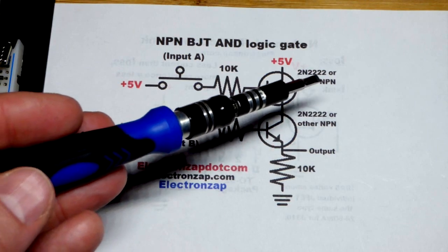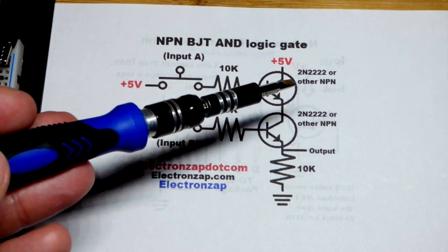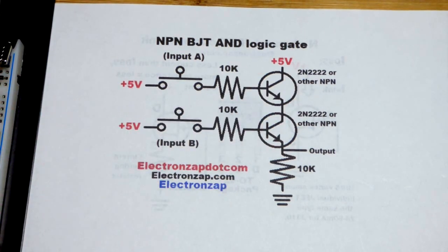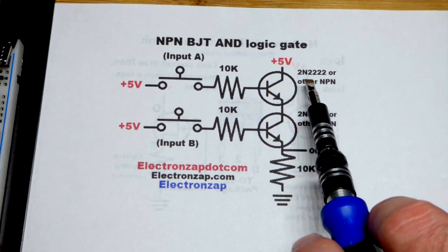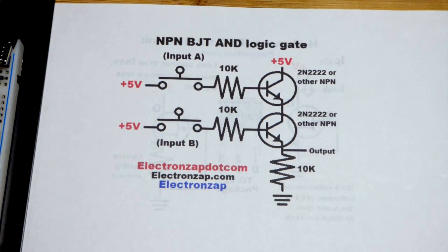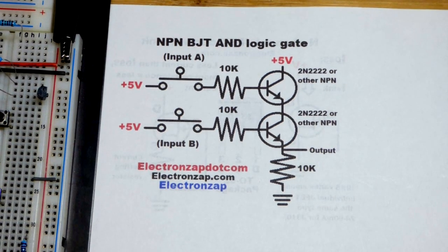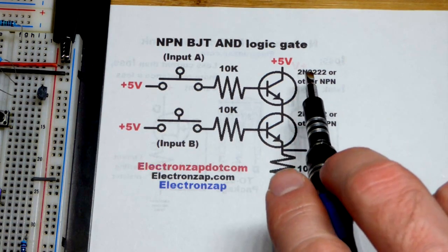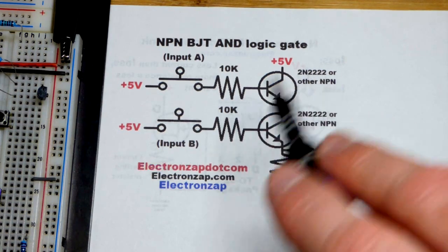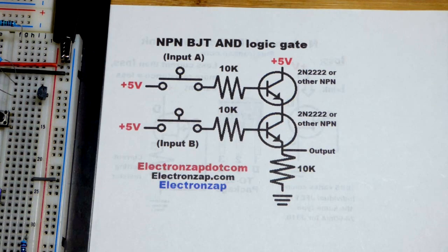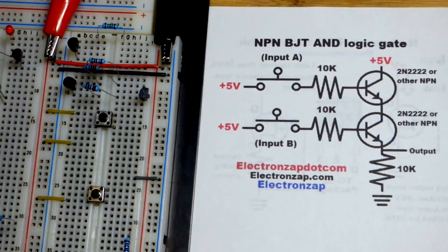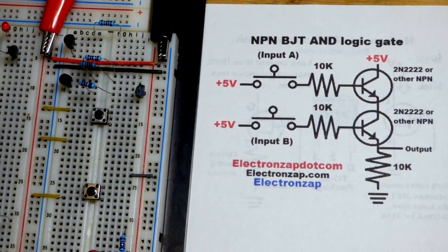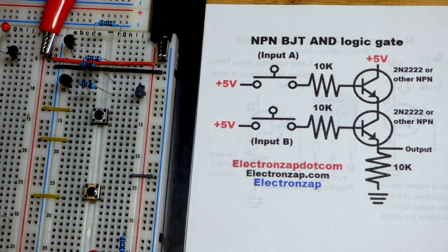We're going to use the 2N2222 transistor. Normally, I've been using the 2N3904, but I'm not sure where I put the ones that I normally use. So I'm going to use the 2N2222s instead. They have the same pin layout, and as far as this circuit is concerned, they basically work about equally well. We're nowhere near the maximum current that they can output.